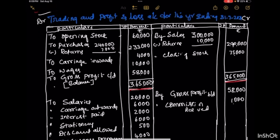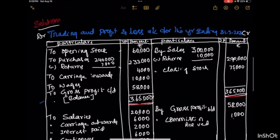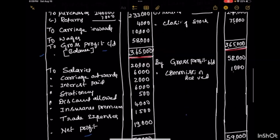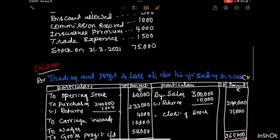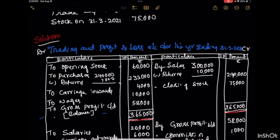It is a continuation. First, we are going to prepare a trading account, and then we will make a continuation with the profit & loss account. The trading account gives the result of gross profit or gross loss. If the debit side of the trading account is more than the credit side, the result will be gross loss. And if the credit side is more than the debit side, the result is gross profit.